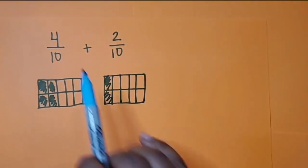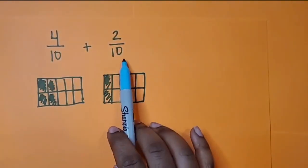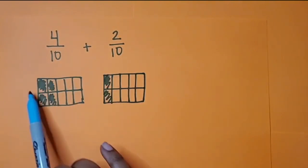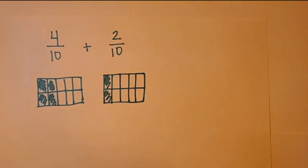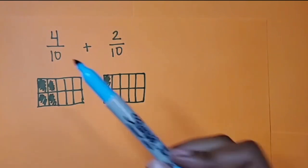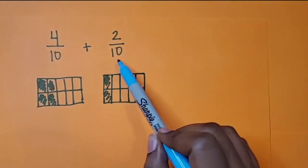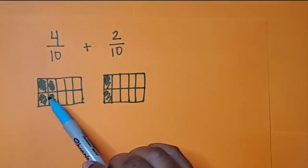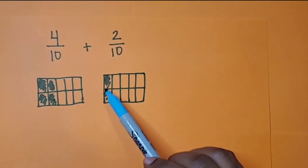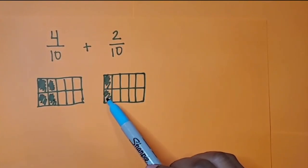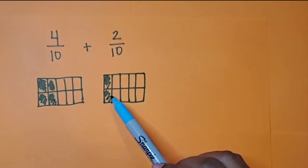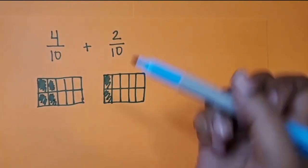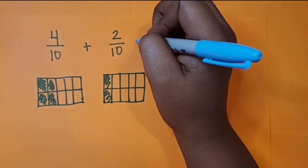Again, because our fractions have the same denominator, the sizes of their parts are the same. So now we can join them together because they are the same size. So 1, 2, 3, 4 tenths here plus 1, 2 tenths over here equals 6 tenths.